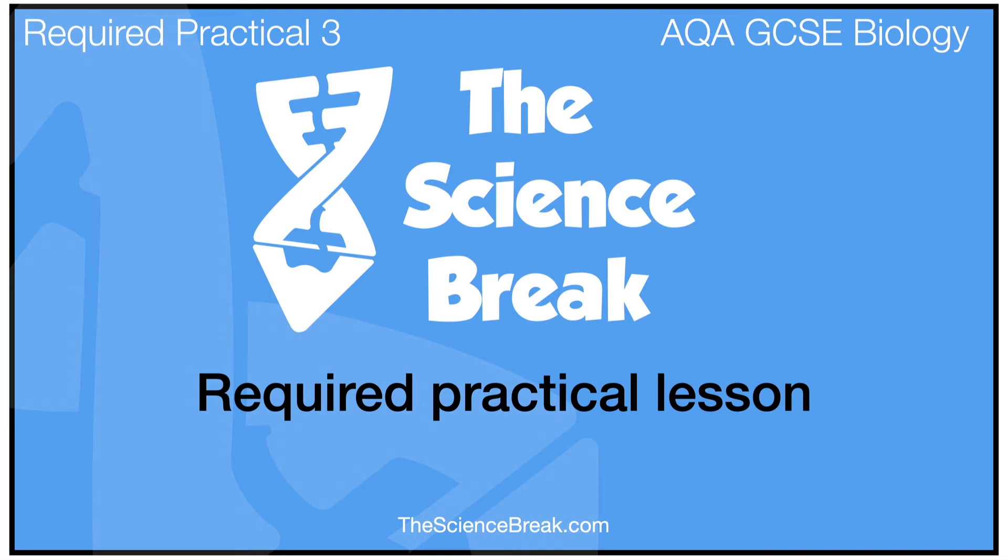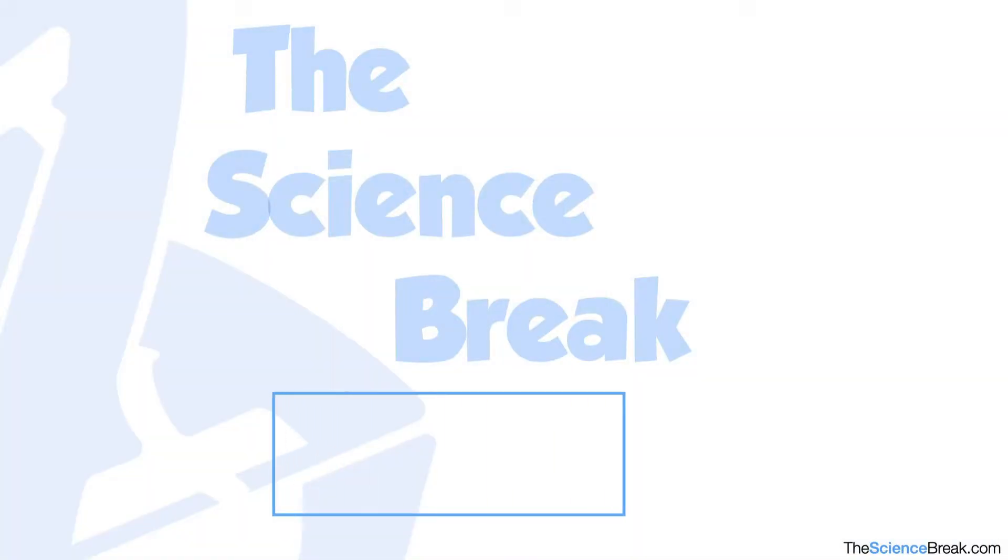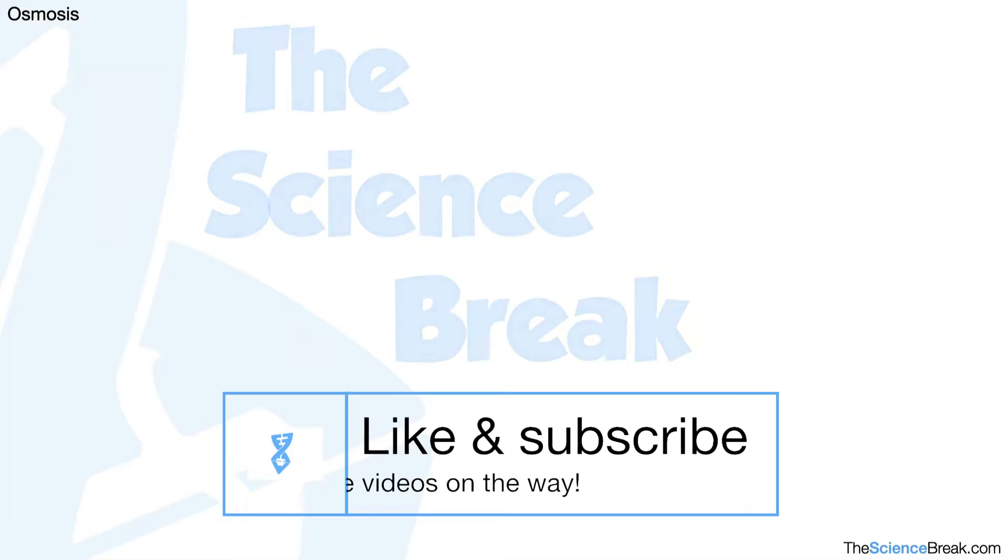Hello and welcome. This is a video for Required Practical 3 for AQA GCSE science, for combined science biology students and triple science biology students. This is called osmosis. The whole point of this practical is to investigate the effect of a range of concentrations of salt or sugar solutions on the mass of plant tissue.